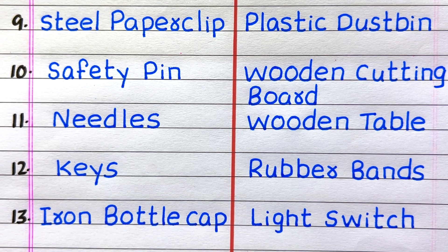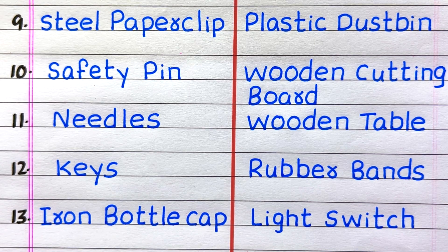The 9th example of a non-metal is plastic dust bin. 10th, wooden cutting board. 11th, wooden table. 12th, rubber bands. 13th, light switch.